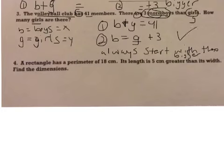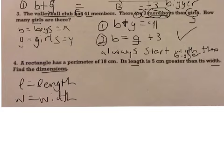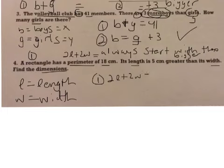A rectangle has a perimeter of 18 centimeters. Its length is five centimeters greater than its width. Find the dimensions. The dimensions are l is length and w is width. Here it says the perimeter equals 18. Perimeter for a rectangle is to add up all the sides. When we add up all the sides we have two lengths and two widths. So our first equation is 2l plus 2w equals 18.